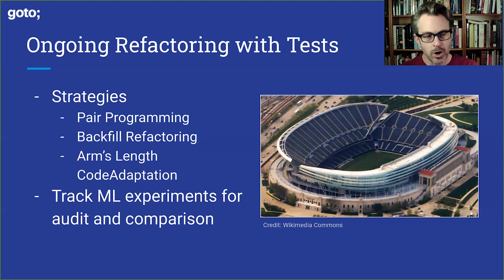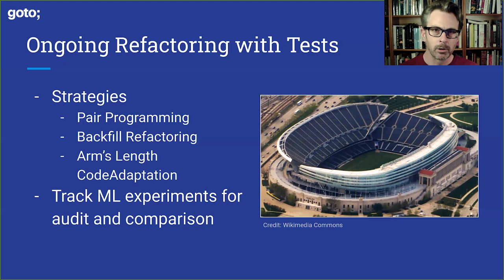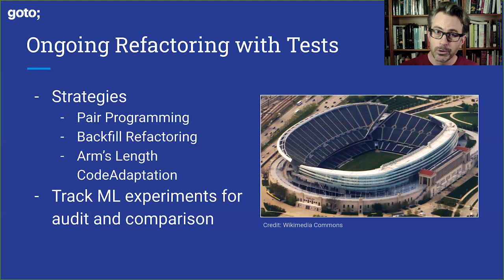Finally, key number seven: track every ML experiment for audit and comparison. This is a fundamental, non-negotiable requirement. If you're going to be doing this work, you need to track it in the same way that software is tracked from a revision control standpoint. Experiments are revisions to the code and they should be tracked — they don't necessarily go into GitHub, but you do need to track them. You use that information as part of a continual improvement process, and to debug and audit the model.